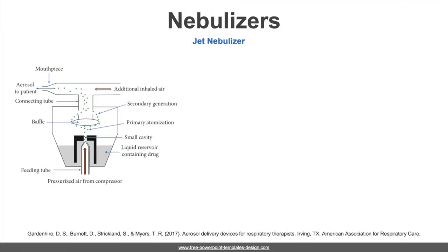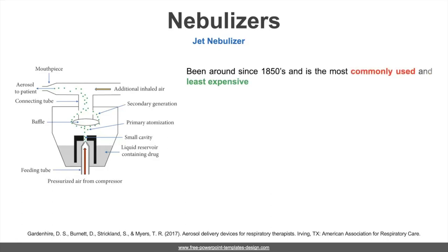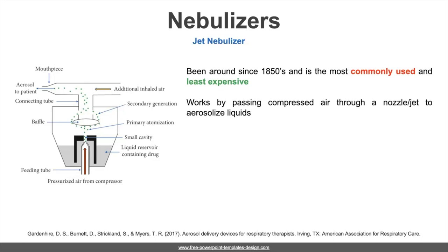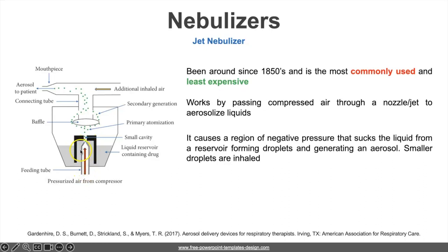Jet nebulizers have been in use since the 1850s and remain the most commonly utilized and cost-effective option. They operate by directing high-pressure air or compressed gas through a nozzle or jet to aerosolize liquids. As the compressed gas passes through the jet, it creates a zone of reduced pressure that draws liquid from a reservoir, causing it to fragment into droplets, generating an aerosol of both large and small droplets. The small droplets are inhaled by the patient, while larger droplets are intercepted by a baffle that redirects them back into the reservoir for recirculation.